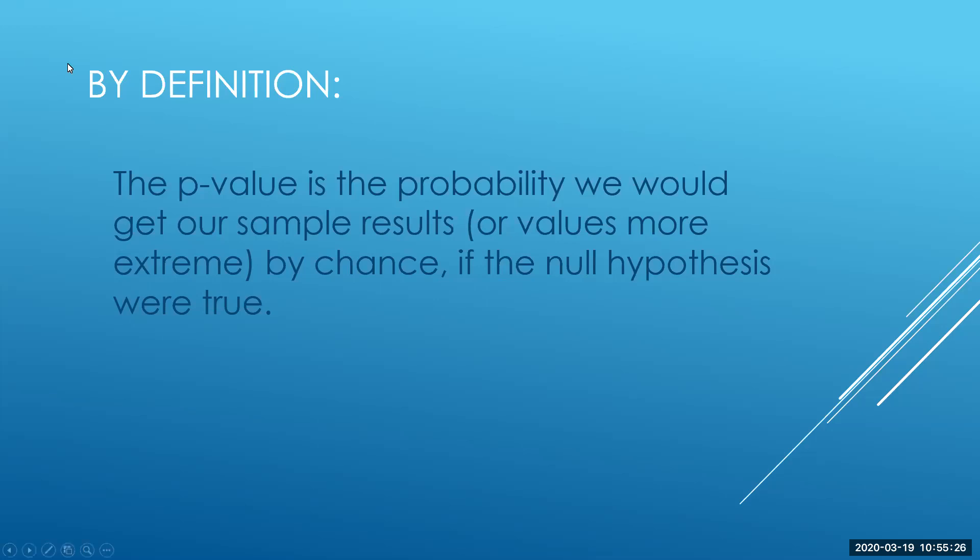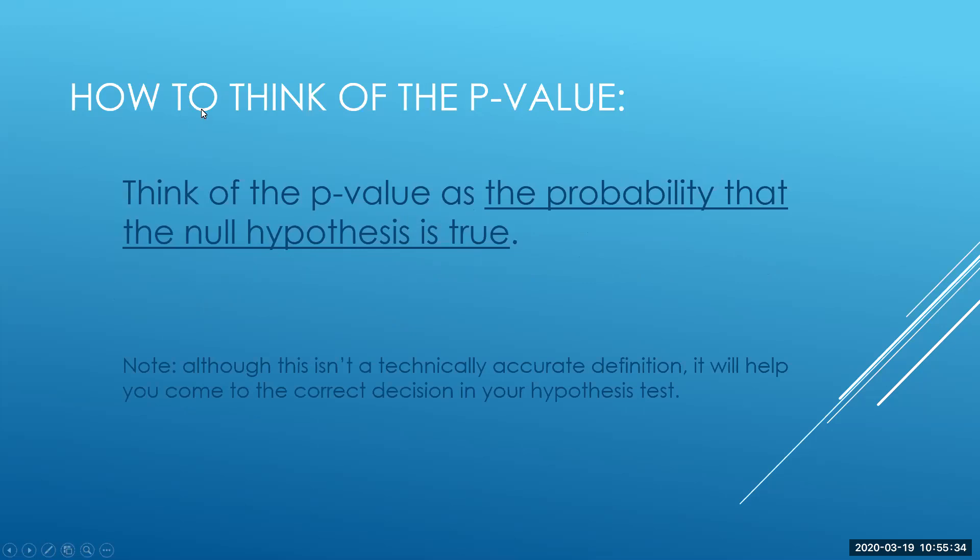So think about what we're doing. We're trying to determine if the null hypothesis were true and we want to know how likely that is to happen. All right, here's how I'd like you to think of what the p-value is. Think of the p-value as the probability that the null hypothesis is true. Now I put a note that it's not technically an accurate definition, but this helps my students the most in remembering what it is.